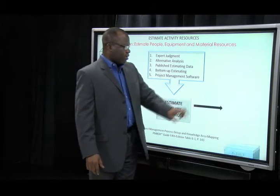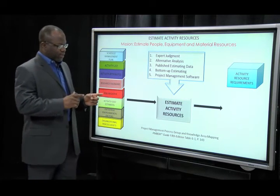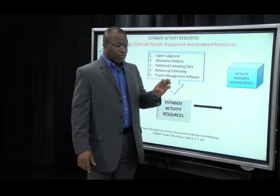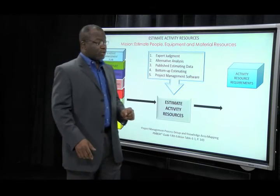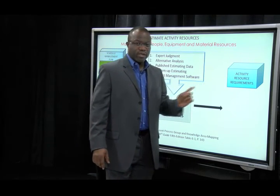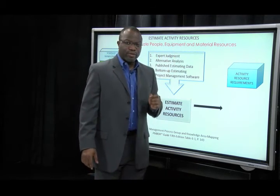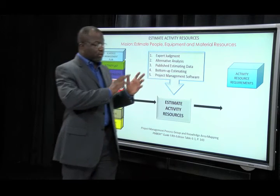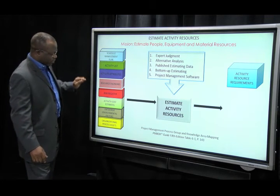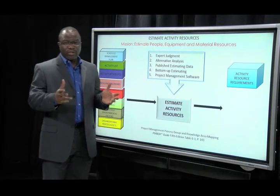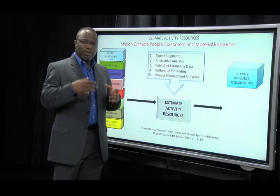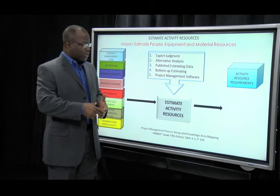Let's take a look at our outputs. Output: activity resource requirements. Don't forget this — you're going to come across that going into human resource management. As you plan human resource management, you need to know what your resource requirements are. And don't forget, these resource requirements are not for HR alone — this is for equipment and material resources as well. It's one of those exclusive ones. You definitely want to know this well for your exam because it has lots of inputs from other areas. Ultimately, when you talk about the budget for your project, it has to do with the resources — that's where a lot of the money gets spent: hardware, software, people, equipment and so on.